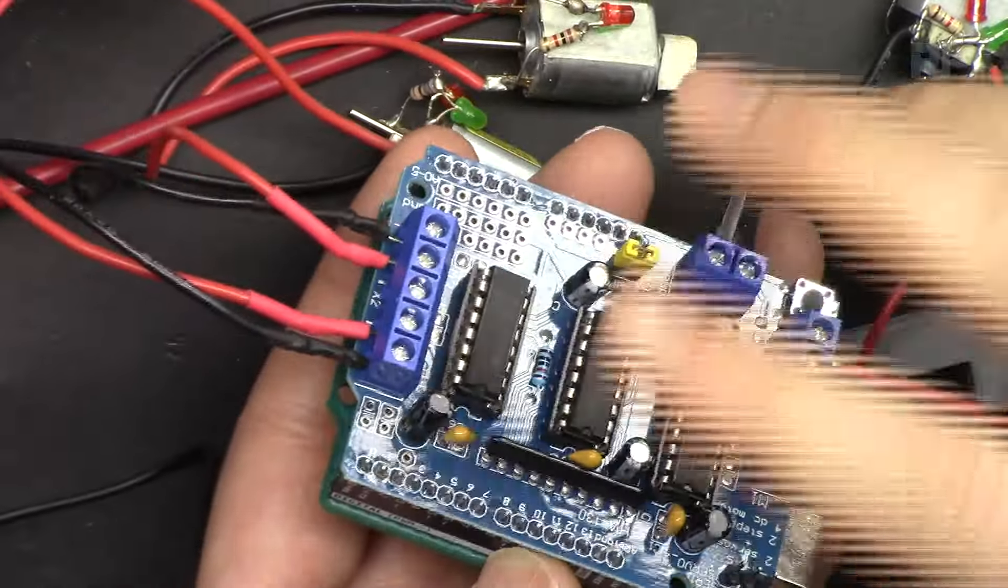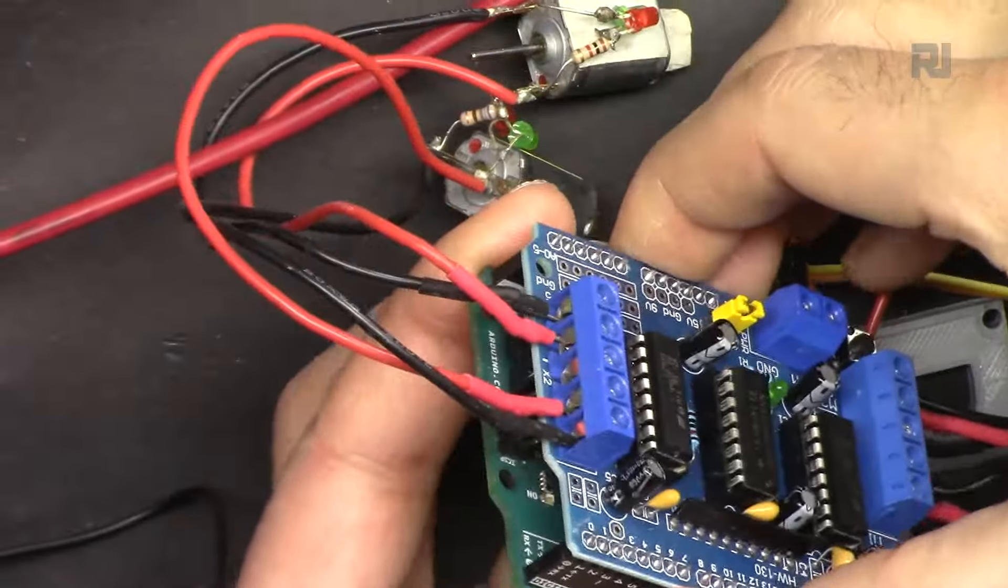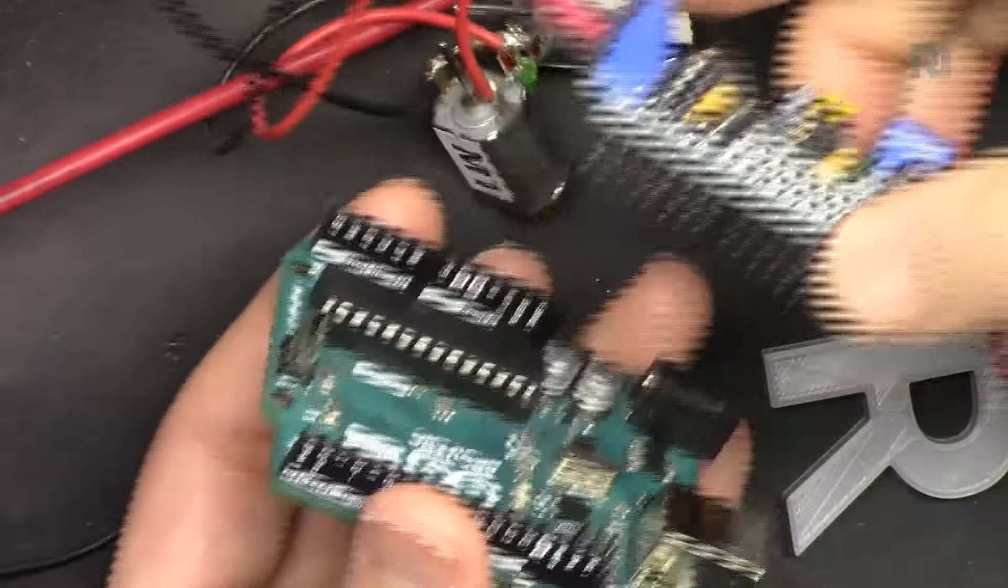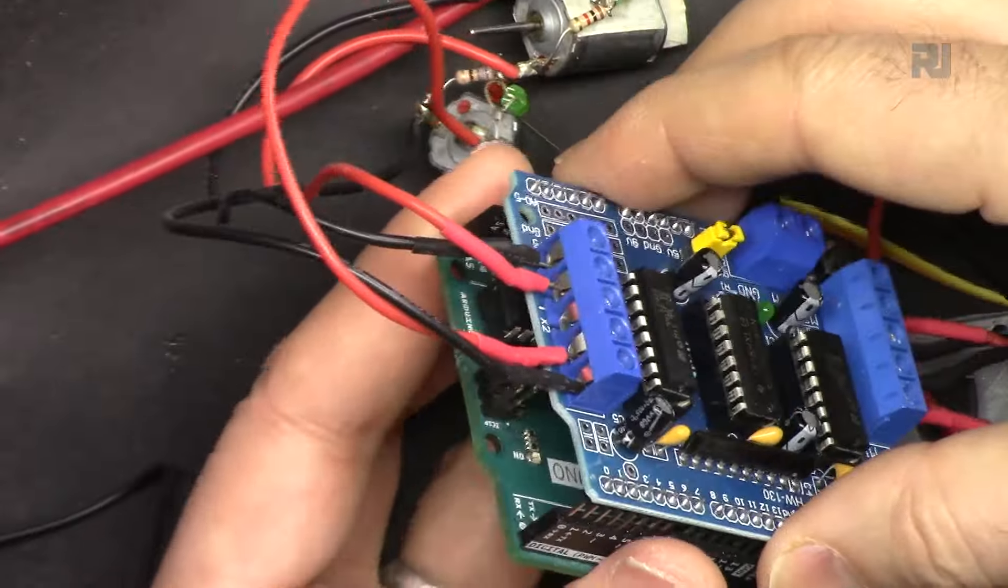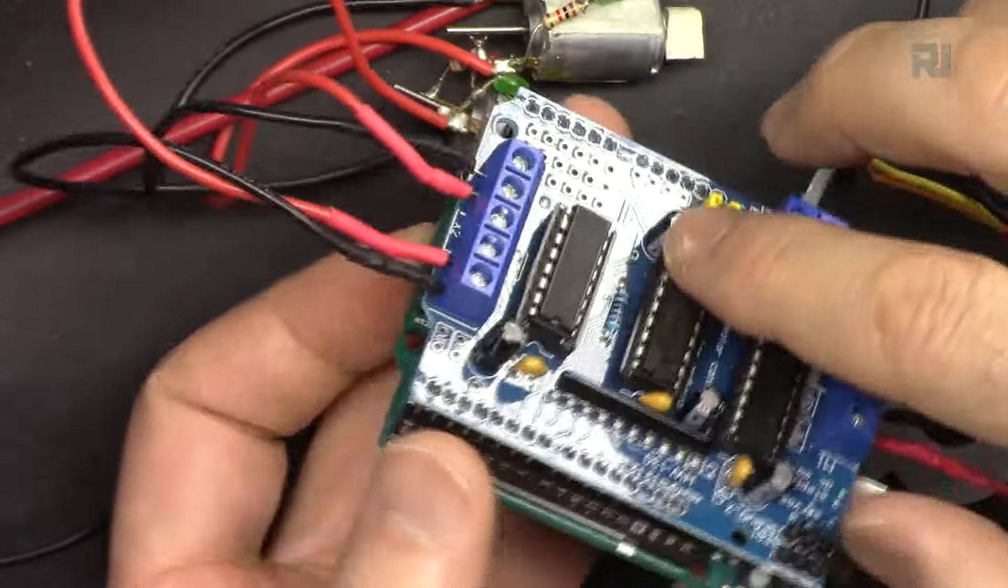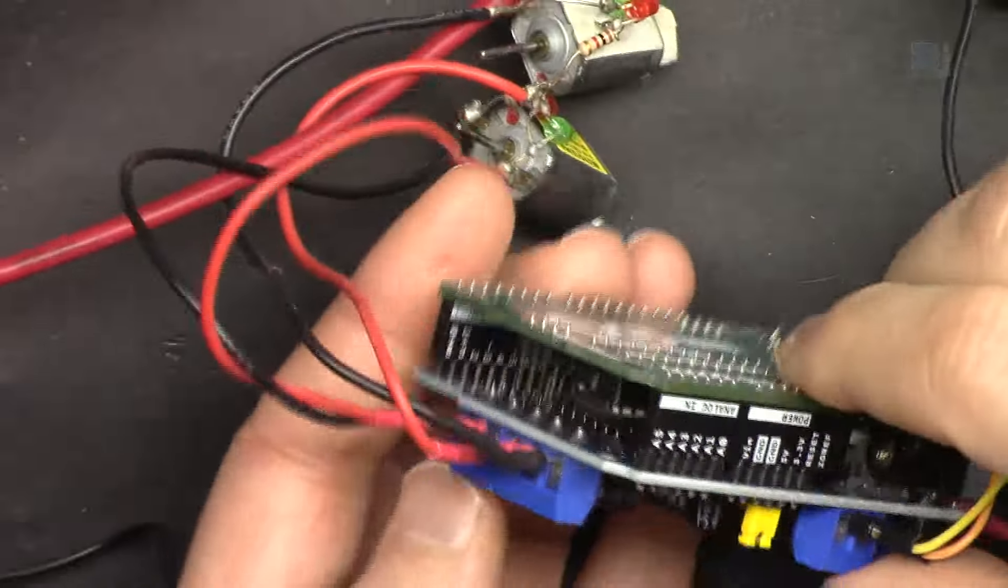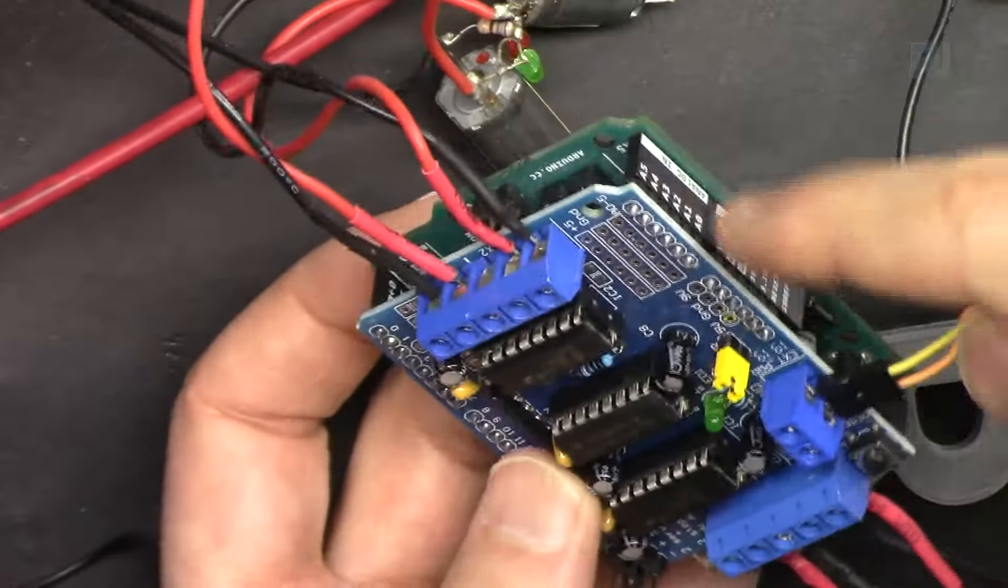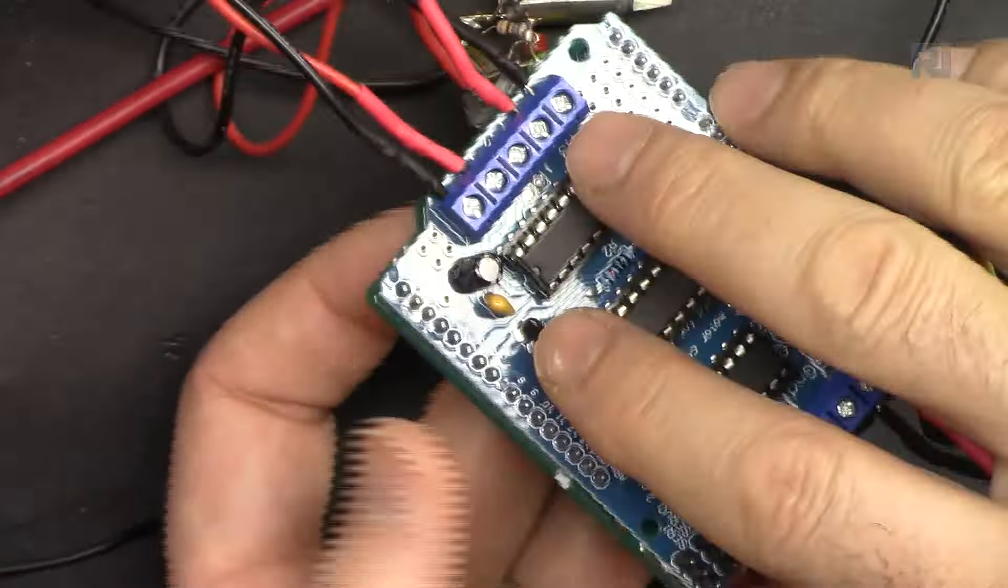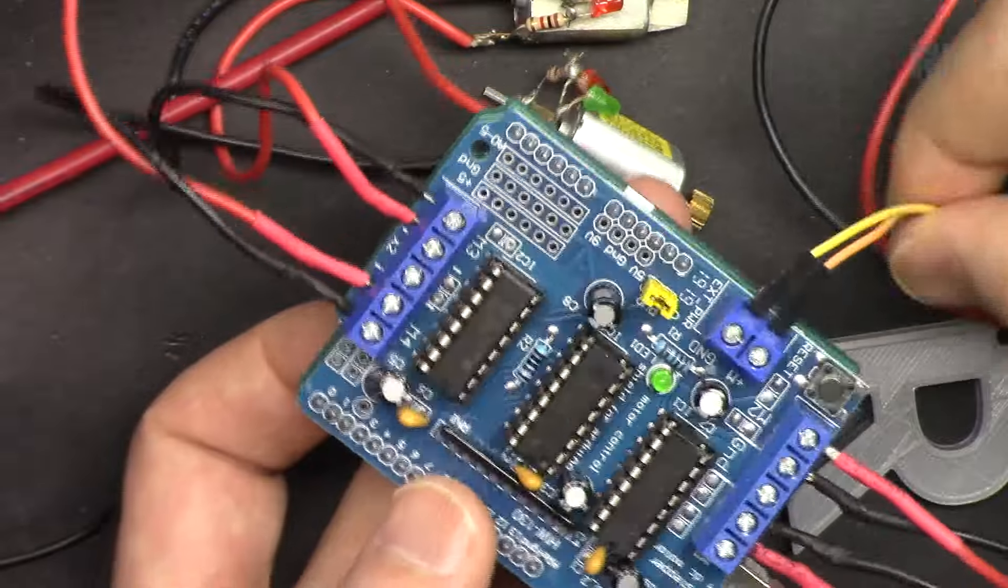We call this a shield because it's just shielding or covering this Arduino and is being inserted from the top. So it eliminates a lot of extra wiring. This is one of the best ways to do prototyping or working on projects. So all this wiring is already done. You just need to connect these few wires. Otherwise there will be a huge mess with connecting so many wires.